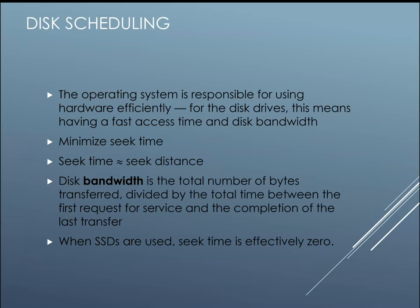Disk scheduling, just like memory scheduling and process scheduling, means the operating system is responsible for using hardware efficiently. For disk drives this means having a fast access time. In regular hard drives as opposed to SSDs, we want to minimize seek time. Disk bandwidth is the total number of bytes transferred divided by the total time between the first request for service and the completion of the last transfer. When SSDs are used, the seek time is essentially zero.